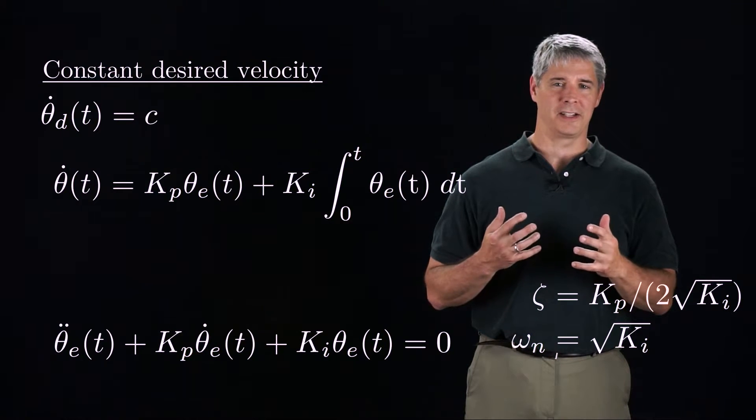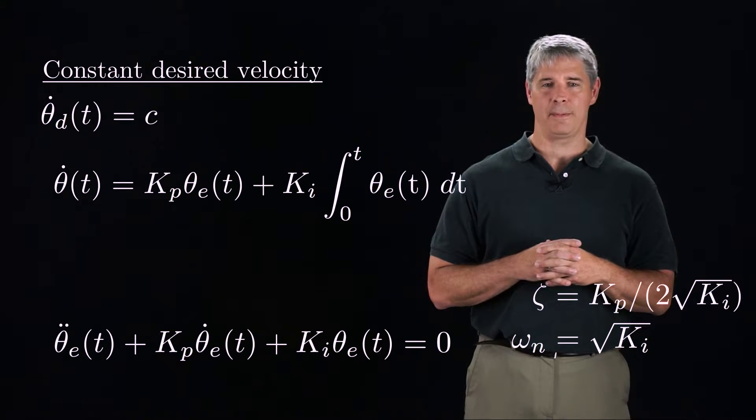By our mass-spring-damper analogy from earlier videos, Ki plays the role of the spring, and Kp plays the role of the damper.